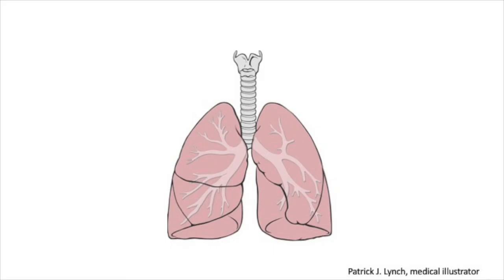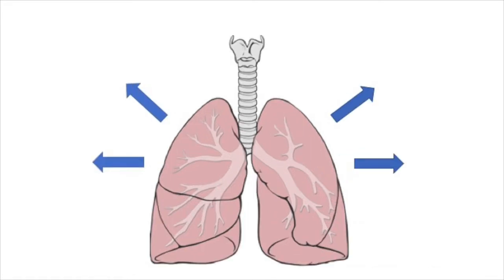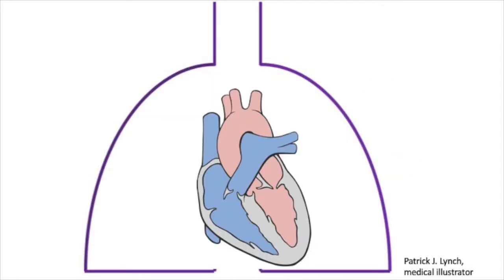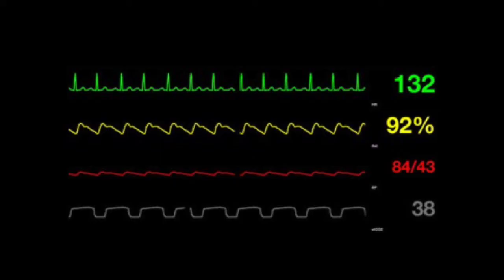Intrinsic PEEP occurs when the time for exhalation is shorter than the time needed to fully exhale, resulting in progressive trapping of air in the lungs with each subsequent breath. This phenomenon, also called dynamic hyperinflation, causes increased intrathoracic volume and pressure, which may lead to decreased venous return to the right side of the heart, eventual hemodynamic compromise, and ultimately death if not recognized and treated in a timely manner.